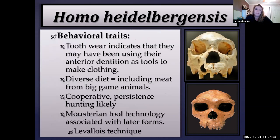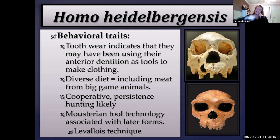Some behavioral traits of Homo heidelbergensis: many fossil remains show intensive, extensive tooth wear on the anterior dentition — the incisors and canines — indicating they may have been using their front teeth as tools to make clothing, holding the animal hide in their teeth and using a tool to scrape it. We see this in both heidelbergensis and the Neanderthals, and it has been interpreted as evidence that these species were starting to make clothing.